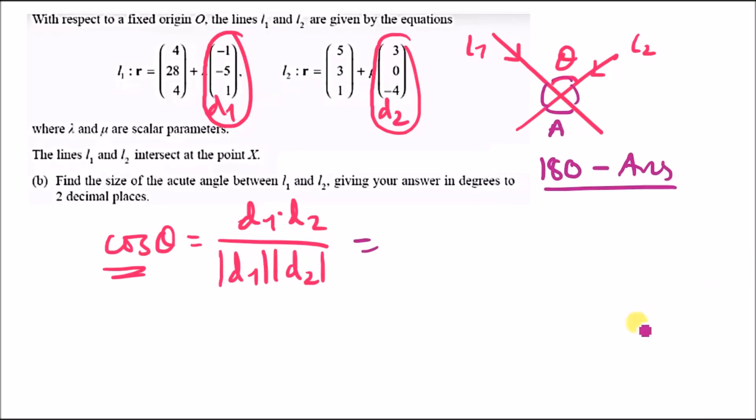The dot product between the directional vectors means we multiply the i, j, and k columns independently. Minus one times three gives minus three, plus minus five times zero gives zero, plus one times minus four is negative four. The sum is minus seven.